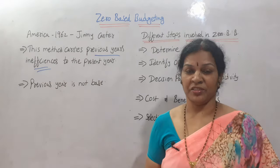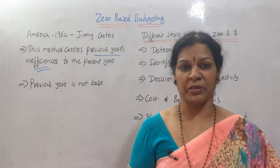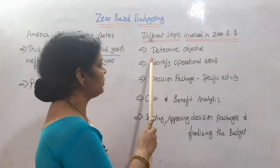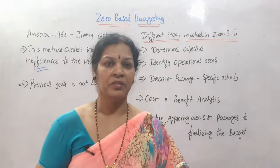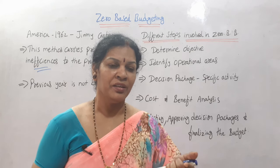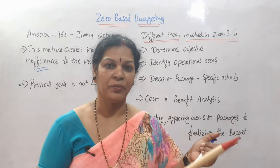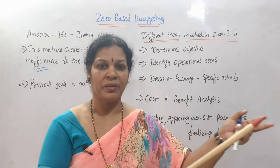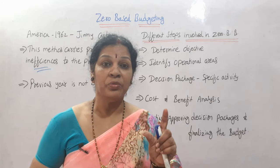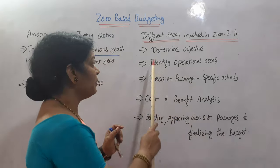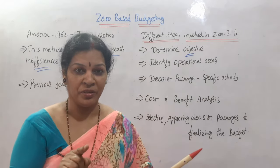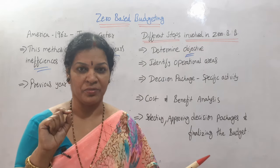In zero-based budget there are five different steps. The first step is to determine the objective — why do we want to prepare this zero-based budget and what is the main objective? Different people focus on different objectives; some focus on operating expenses, some on sales, some on production. So the objective should be common and clearly determined before focusing on particular concepts.